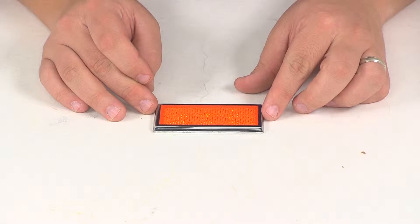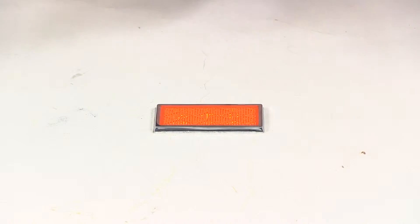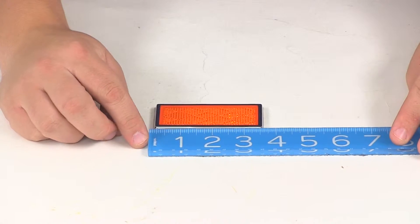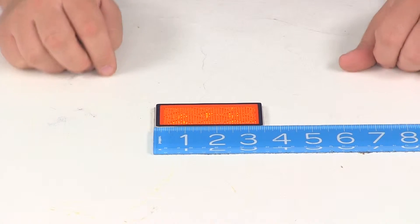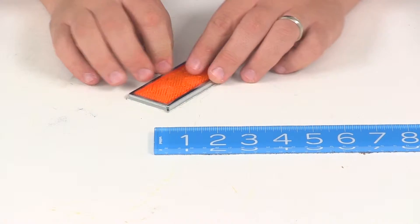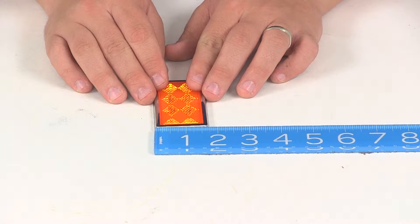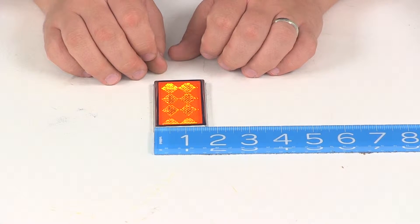We're going to go over the measurements real quick starting with the overall length. Measuring from edge to edge we can see that's going to measure three and a half inches long and then the width from edge to edge is going to give us a measurement of one and three-quarters of an inch wide.